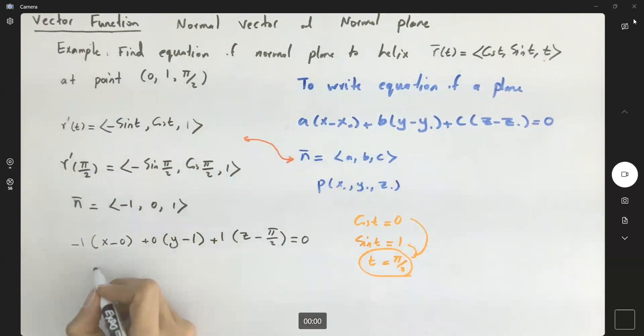Simplify this. You get -x, this is just zero, plus z - π/2 = 0. Or in another word, you can write it this way: z = x + π/2.